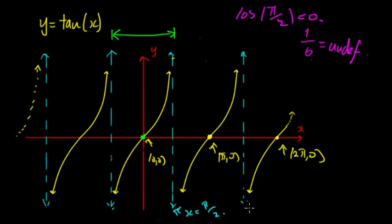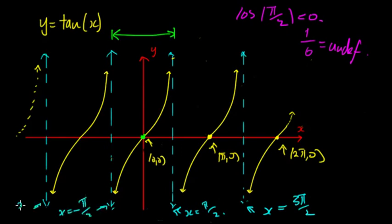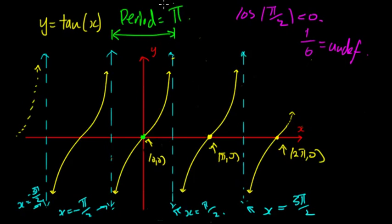All the asymptotes occur when cos x = 0. So we have x = π/2, then x = 3π/2, and going the other way, x = -π/2, x = -3π/2. It keeps going — there will be infinite asymptotes. The graph repeats, so there's a period. With sin and cos the period was 2π, but with tan the period is π. That's one of the key differences. From -π/2 to π/2 is a change of π, and then it repeats after those values.